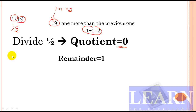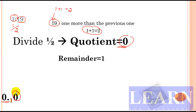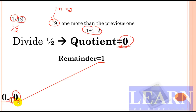We write the result in a particular format. First write '0.' then record each step with the quotient as a larger number and the remainder as a smaller superscript number. So for our first step: quotient 0 is written large, and remainder 1 is written small beside it.